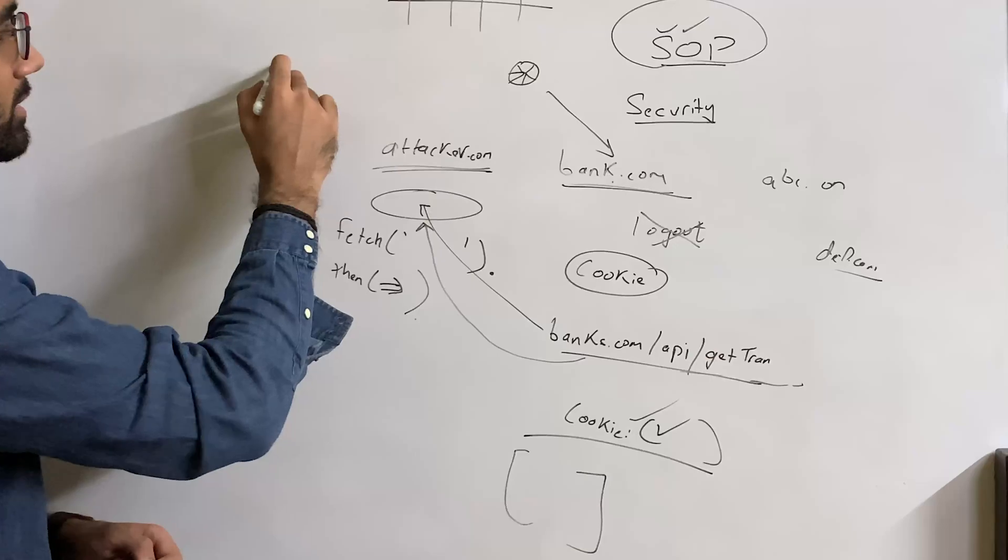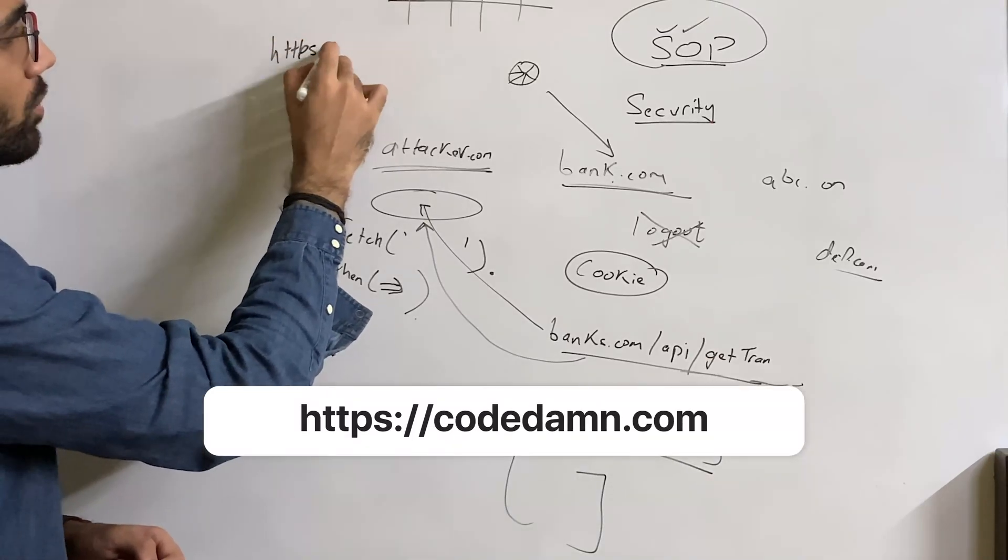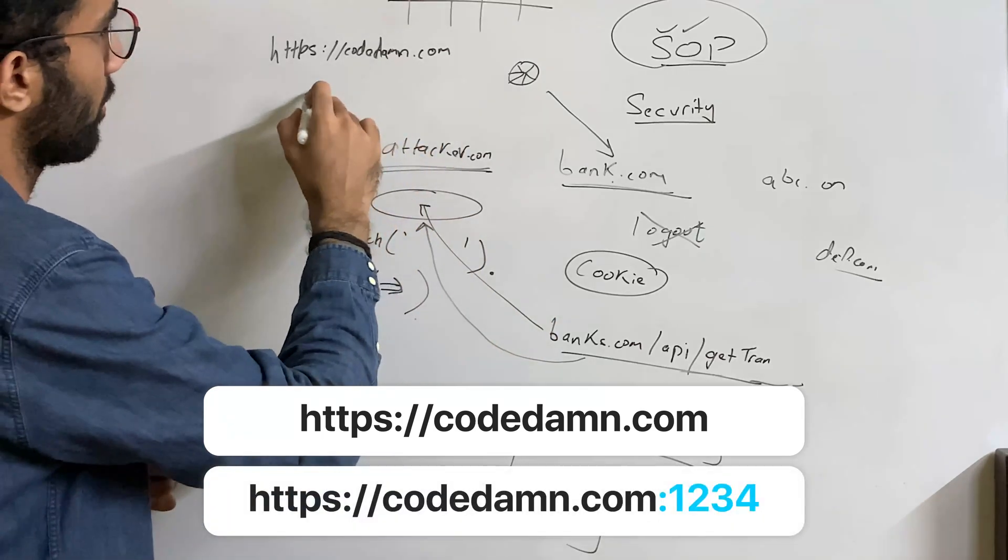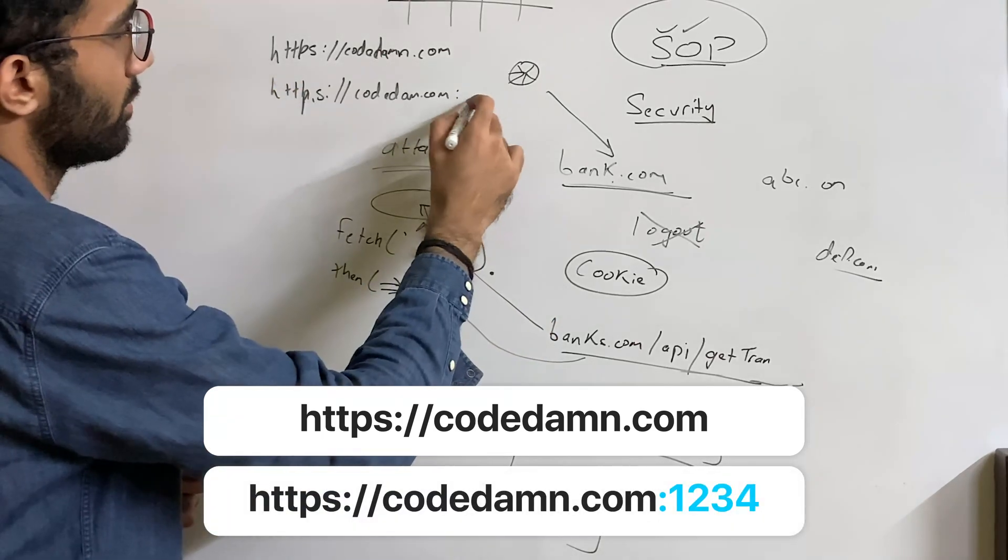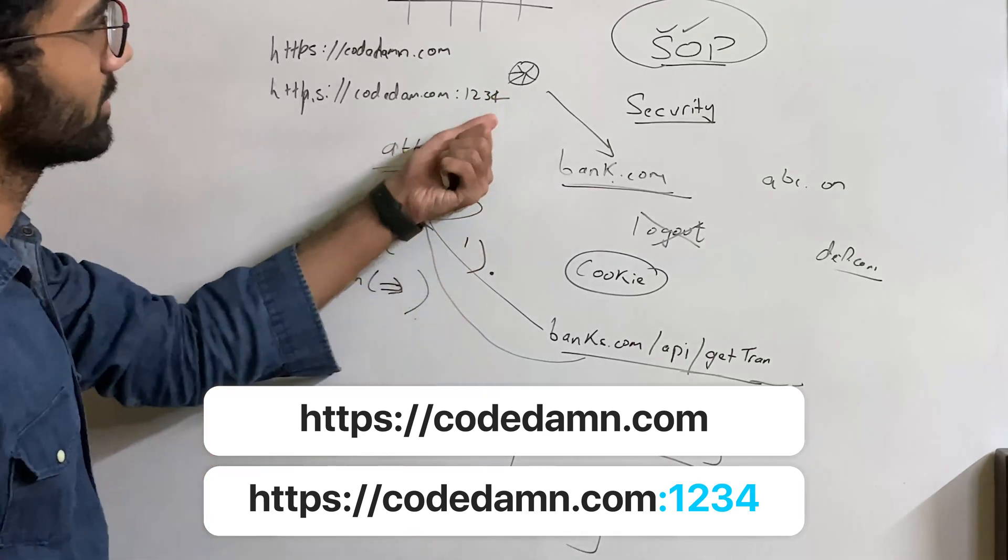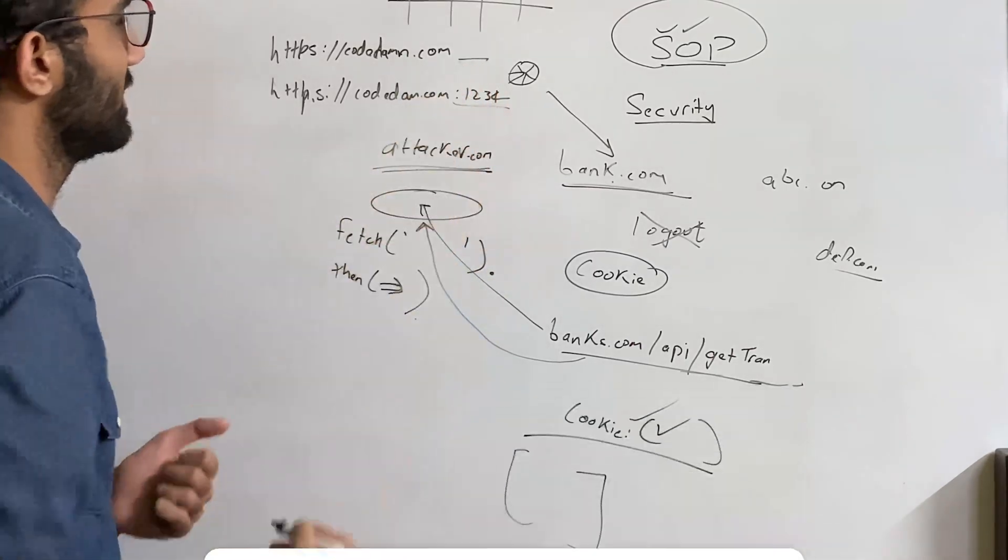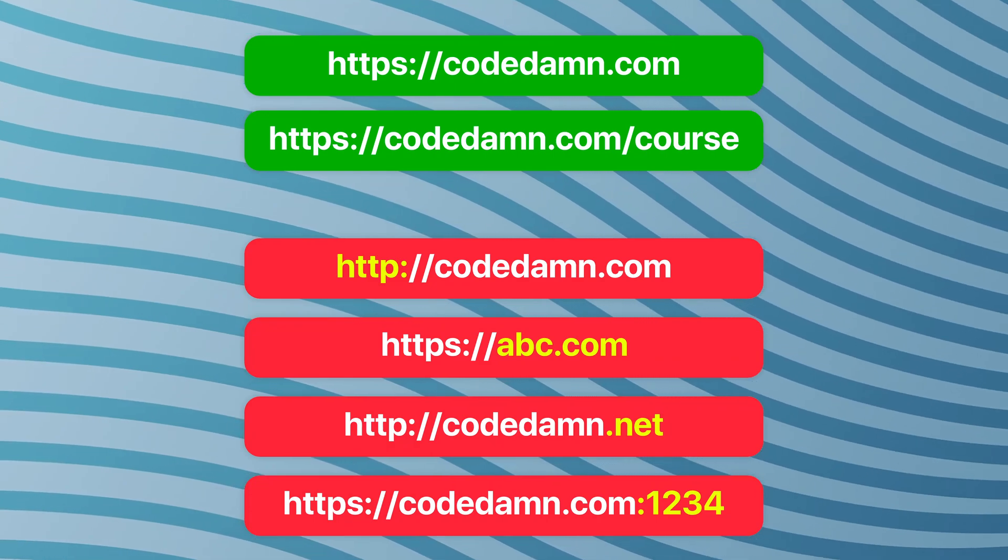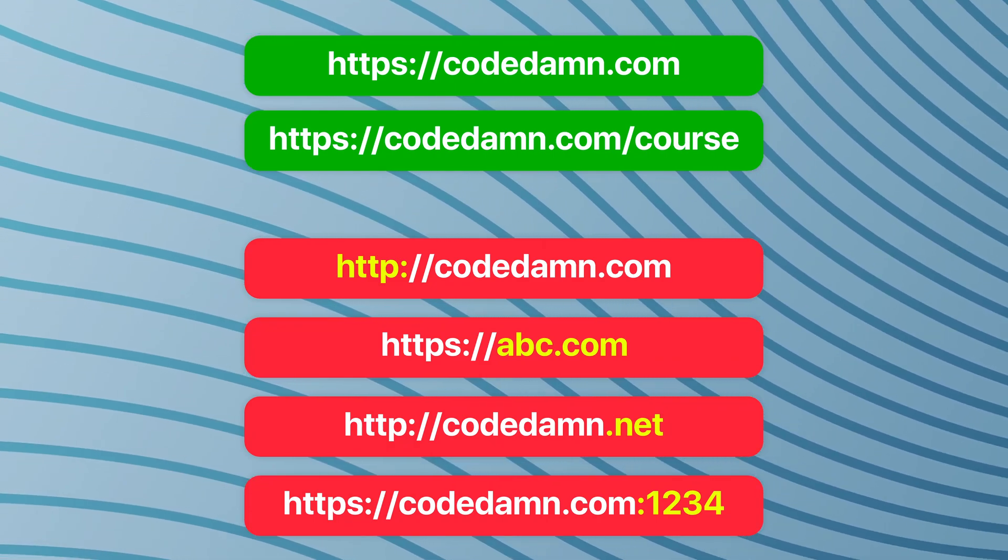Now what same origin is, you can pretty much read the list of all the same origins, but I can give you some examples. For example, https://codedamn.com is different origin from https://codedamn.com:1234 because they have different port numbers. Similarly, HTTP and HTTPS would also be different origins.